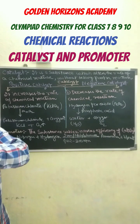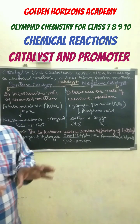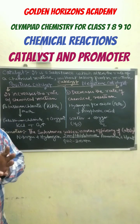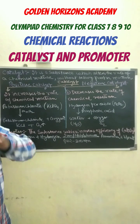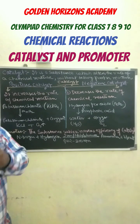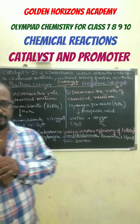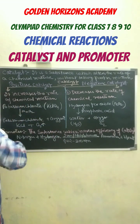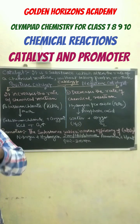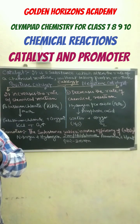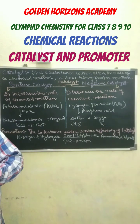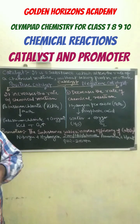A catalyst is a substance which does not take part in chemical reactions but alters the rate of reaction. Catalysts are of two types: positive catalysts, which increase the rate of reaction, and negative catalysts, which decrease the rate of reaction.